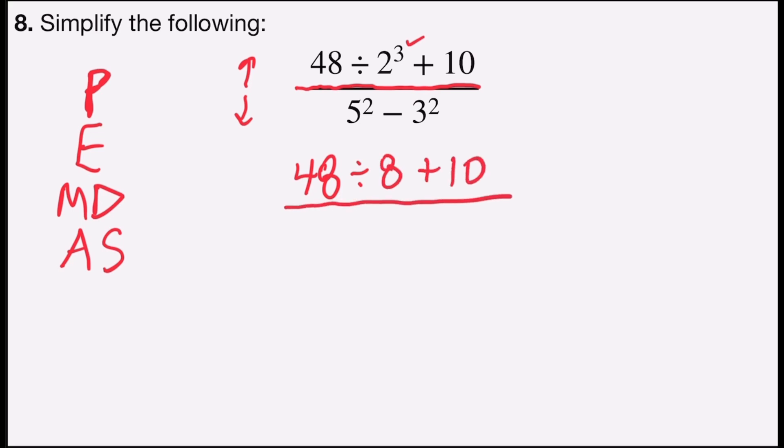And in the denominator, I have two exponents, 5 squared and 3 squared. So 5 squared is 5 times 5, which is 25, minus 3 squared is 3 times 3, which is 9.